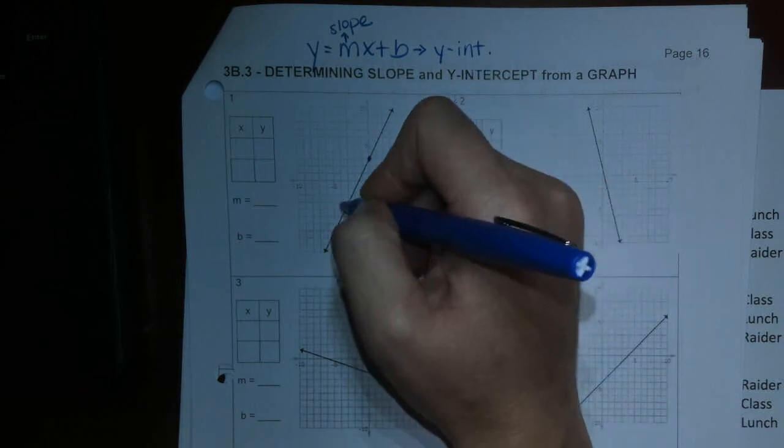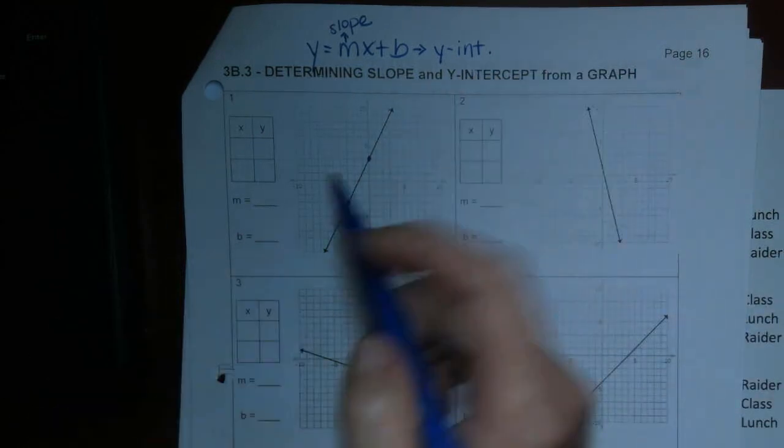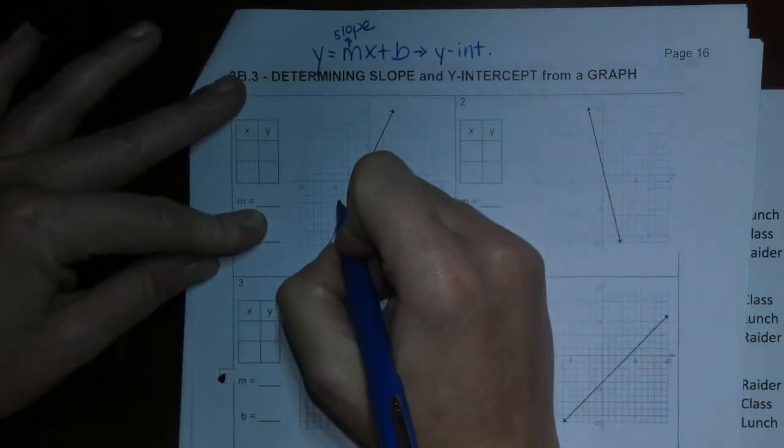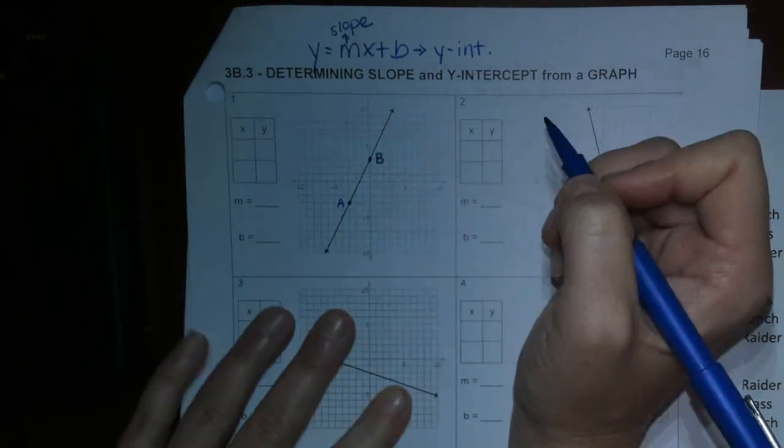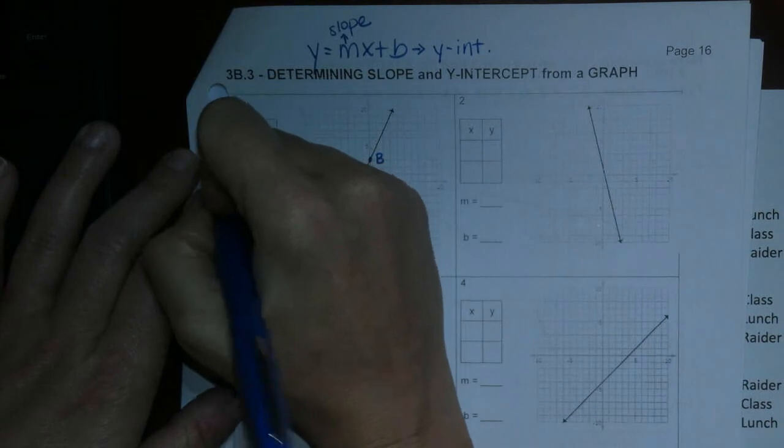All right, so what we're going to do here is we're going to call this point A and this one point B. Okay, just so you know the difference. And this is going to be A and this is going to be B.